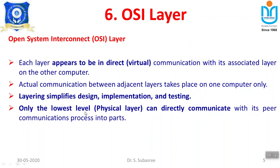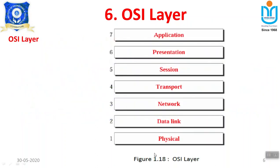Only the lowest layer — the physical layer — has direct communication with its peer process. Peer process means the same group: for example, your classmates are called peer group members because they belong to the same class with the same set of rules and regulations. This OSI layer architecture consists of 7 layers. Whenever you are asked about the OSI layer — whether in exams or interviews — always start from the physical layer and reach the application layer. The order must not be changed.